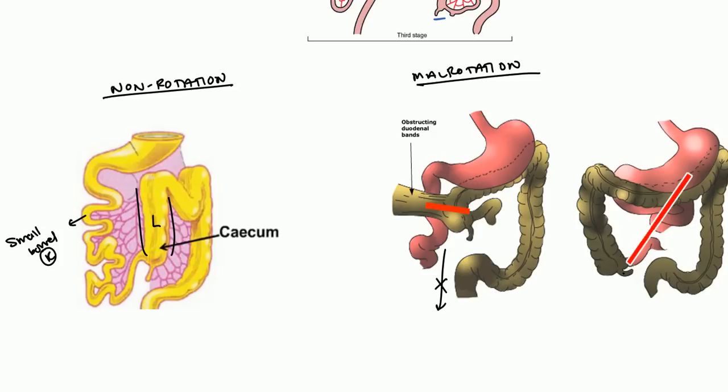The malrotation, believe it or not, is actually associated with more complications than non-rotation. The primary reason is because of the mesenteric base. So what happens here is, if you see this red line here, this red line is highlighting the base of the mesentery.